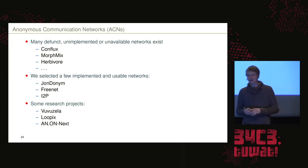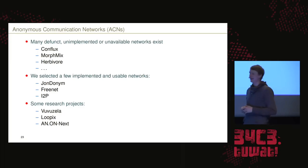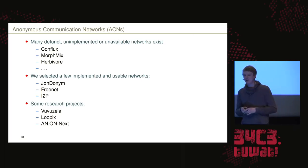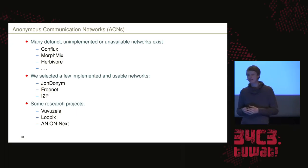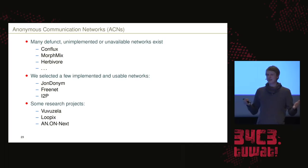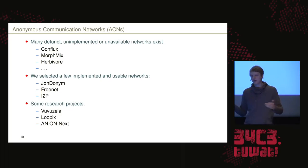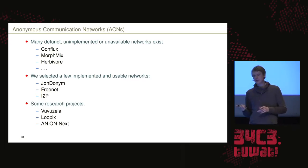How did we select the networks we surveyed? We noticed that there are a lot of things out there which are either not implemented, not functioning well, or simply not practical. We found four networks — besides Tor — which are quite easy to use and have active development: Jondonym, Freenet, GnuNet, and I2P.